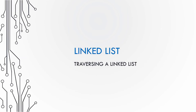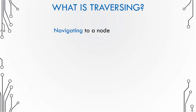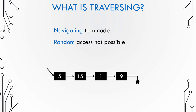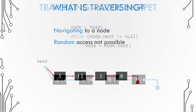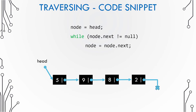Let us learn how to traverse a linked list. Traversing means navigating to a node in a linked list. There is no random access in a linked list — random access is possible only in an array. To traverse, you start from the first node and check the link of that node to go to the next, and so on. When you find there is no link ahead, you stop — you have reached the last node.